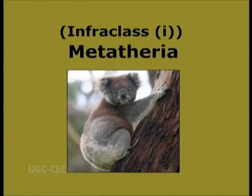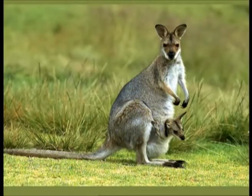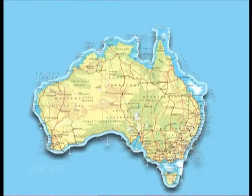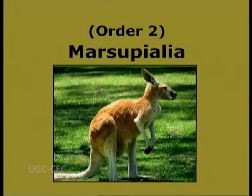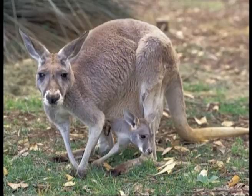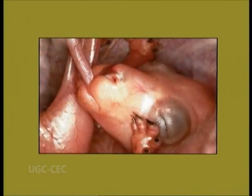Infraclass Metatheria — Meta meaning after. They are the pouched and viviparous mammals. They may be with or without rudimentary yolk sac placenta. They are mostly confined to the Australian region. It comprises only one order, Marsupialia. Marsupion meaning pouch — animals bearing an abdominal pouch. These animals are born in a very immature state and complete their development attached to the nipples of the abdominal pouch or marsupium.